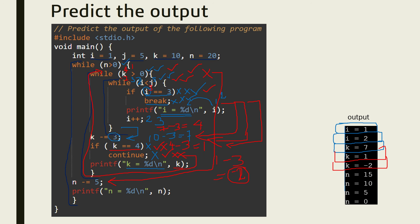Now n minus equals 5 is executed: n equals n minus 5. The initial value of n was 20, so 20 minus 5 equals 15 — that value is stored in n and printed, so n equal to 15 is shown. It goes back to the outer while loop and checks n greater than 0. n is 15, which is greater than 0, so this is true.